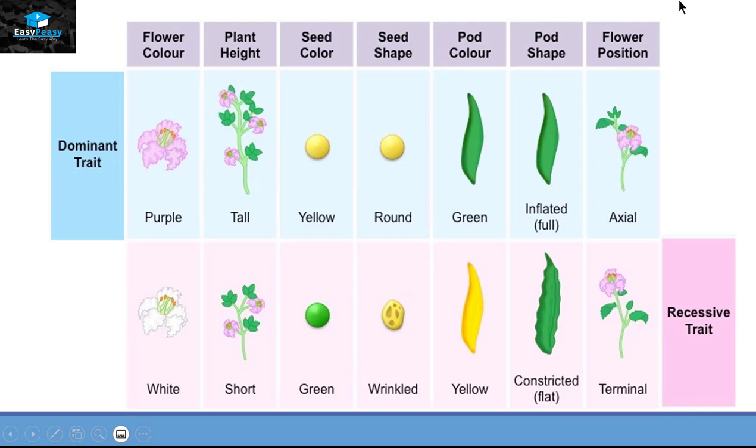Purple color flower is dominant over white, tall plant is dominant over short plant, yellow seed color is dominant over the green seed color, the round seed is dominant over the wrinkled one, the green pod is dominant over the yellow pod, the inflated pod is dominant over the constricted pod, and axial flower position is dominant over the terminal position.